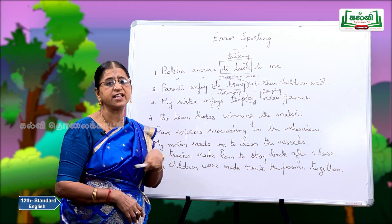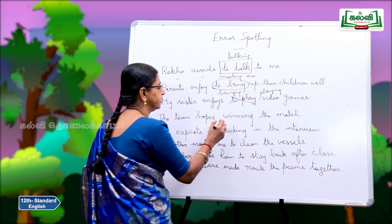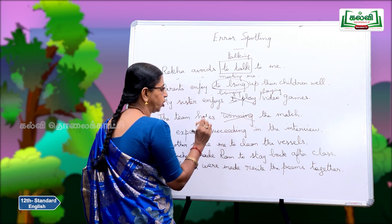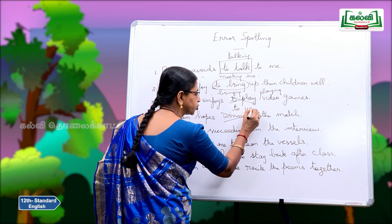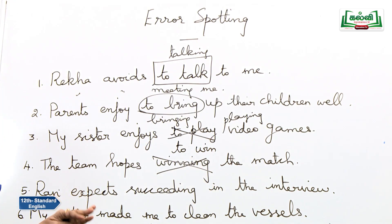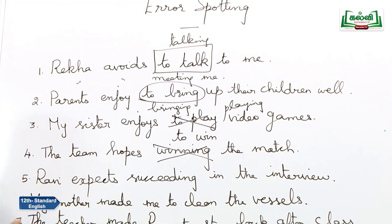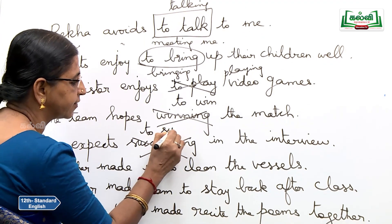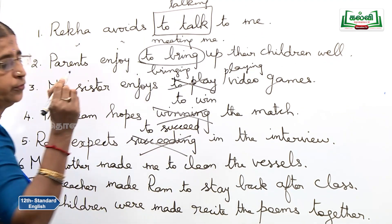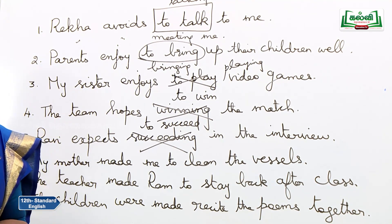The team hopes winning the match — the moment you read it, you find something is wrong. This -ing form is not needed here. The team hopes to win the match. We expect something to happen. Ravi expects to succeed in the interview. Ravi expects passing the examination in flying colors — that should be Ravi expects to pass the examination.